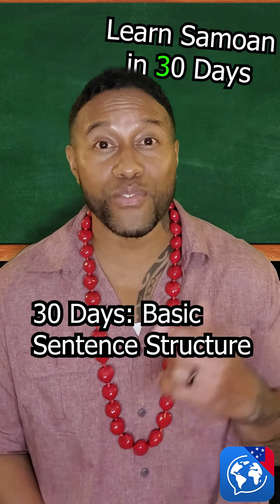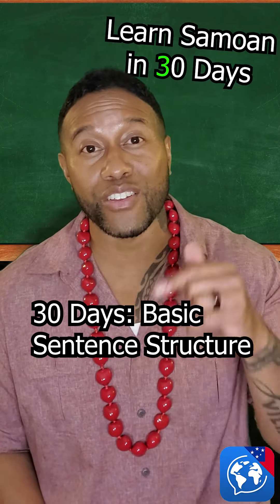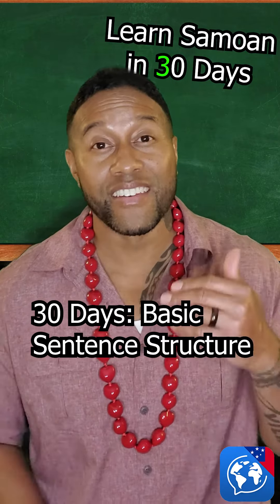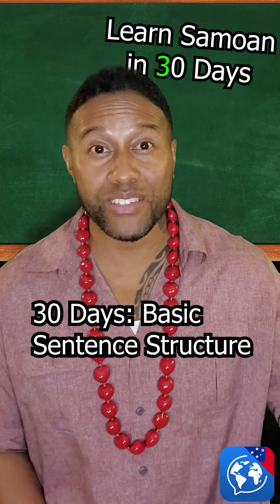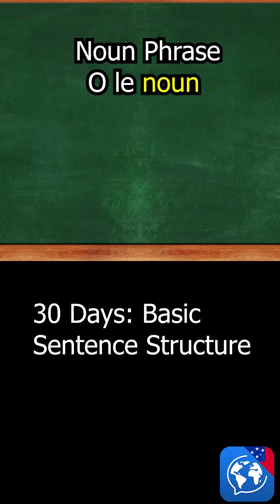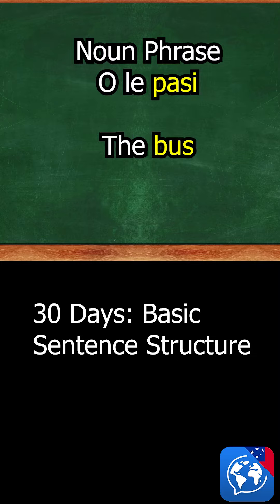The next 30 days is devoted to learning how to use the words in its proper format. Nouns are usually used in this format — it begins with the O, a word that limits the noun like 'le' or 'the', and then the noun. In this case, we're going to use 'pasi' or bus, so 'le pasi' means 'the bus'.